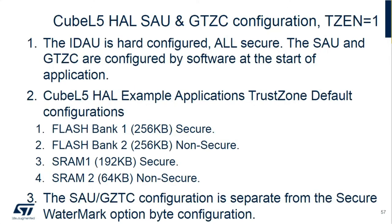Once we enable the TrustZone, the IDAU configures everything as secure. There's also the GTZC — the Global TrustZone Controller — which controls the peripheral secure versus non-secure configuration. Both of those are configured at startup. The HAL has an assumption of how we want to use the memory: it configures flash bank one as secure, bank two as non-secure, SRAM bank one as secure, and SRAM bank two as non-secure. You can configure it however you want.